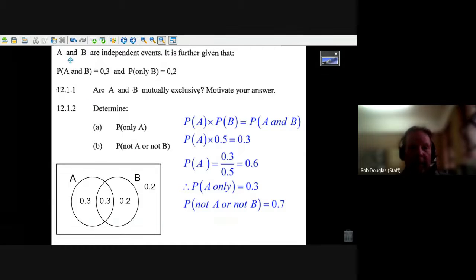It says A and B are independent events. Whenever they say that, write this down. The probability of A times the probability of B equals the probability of A and B together. That's just the true thing, and it's going to help you answer the question.